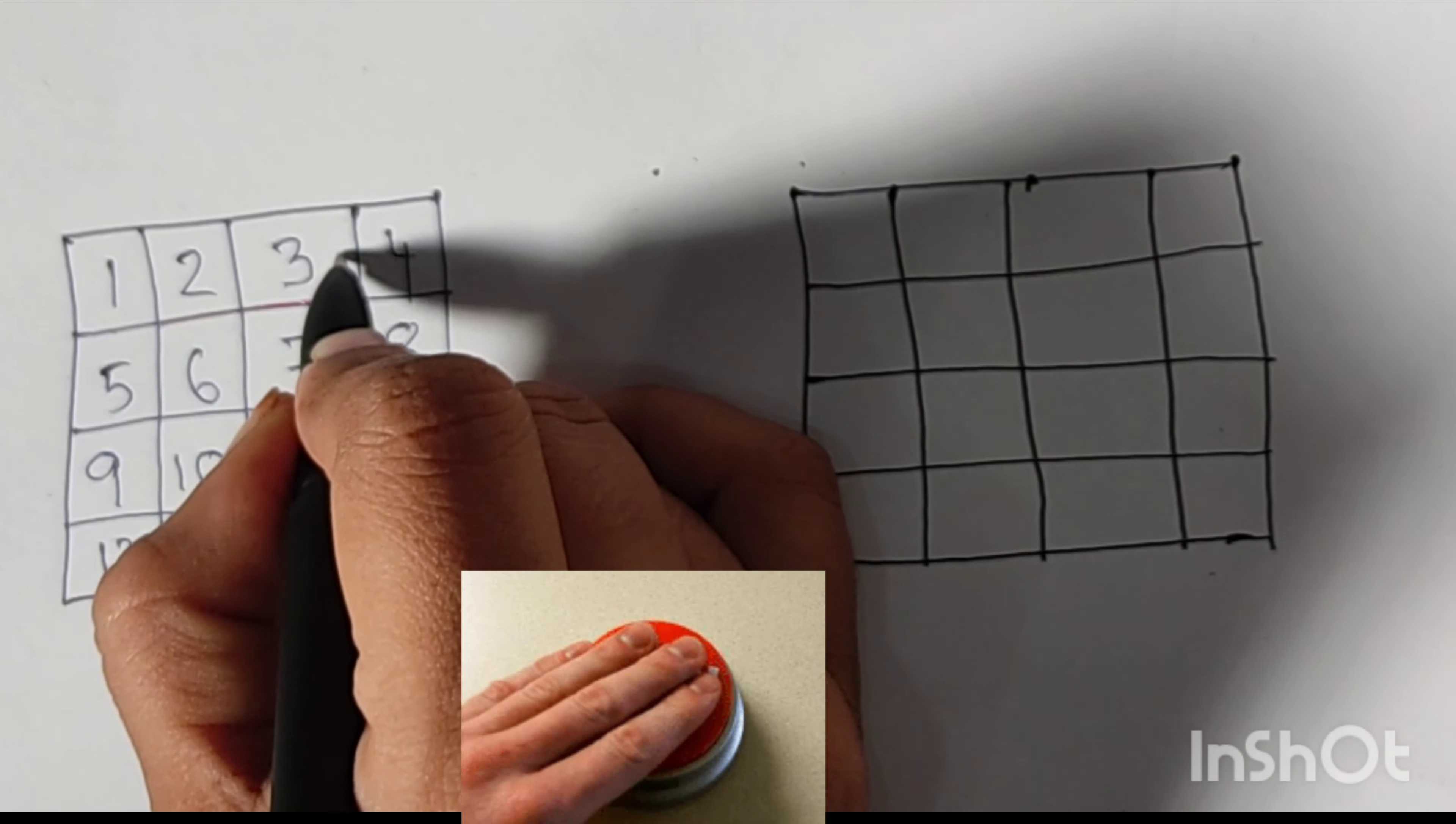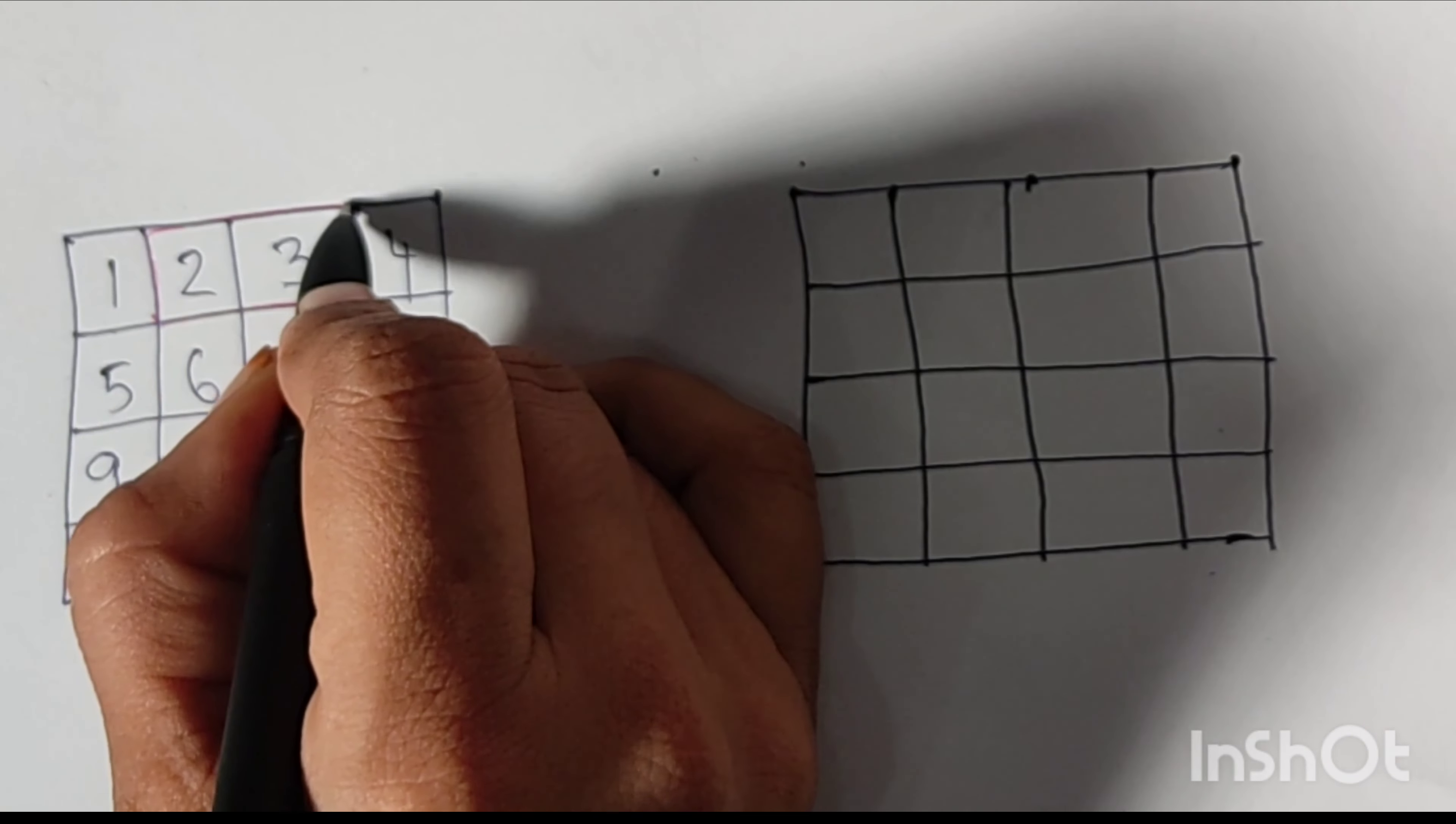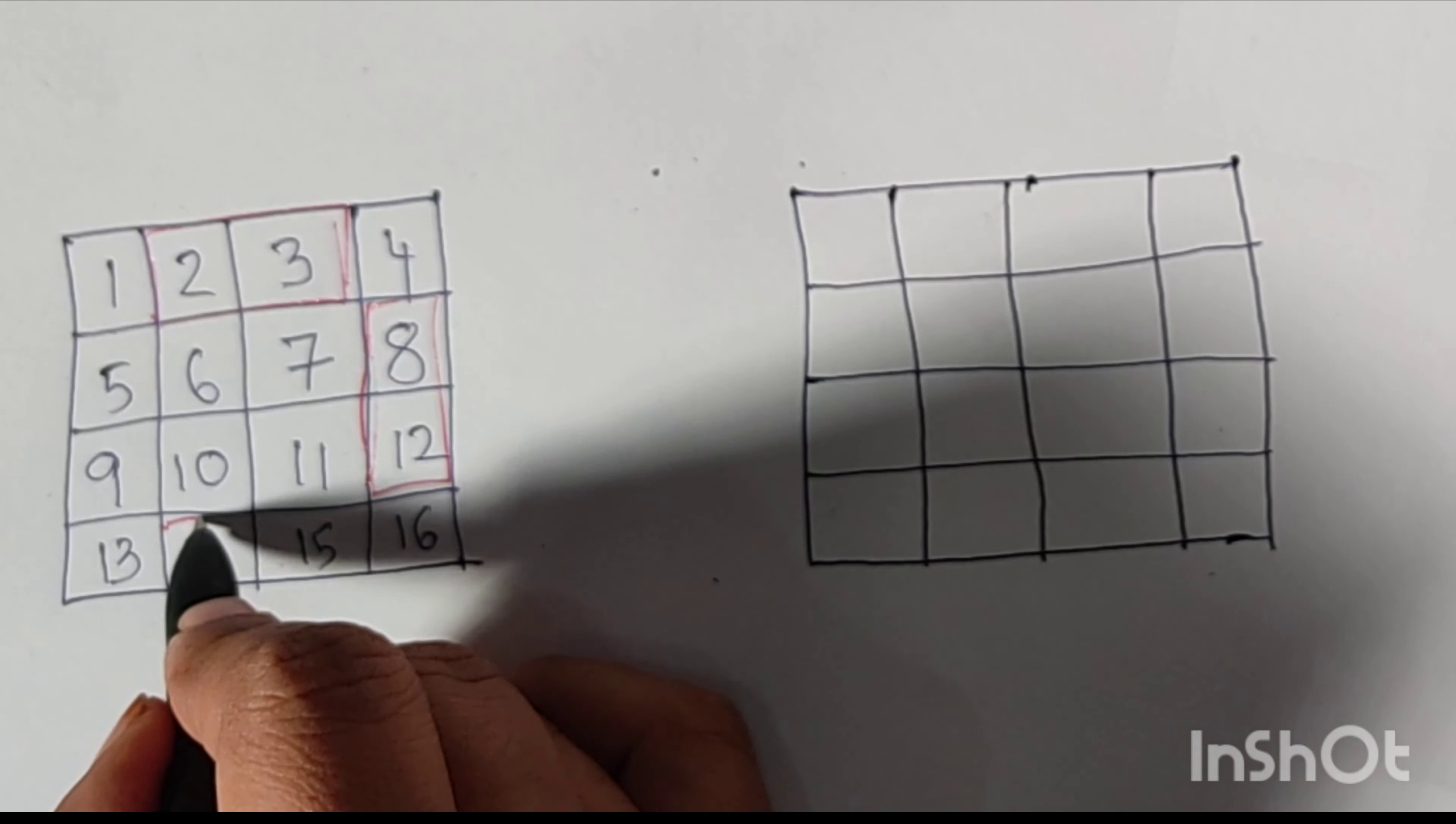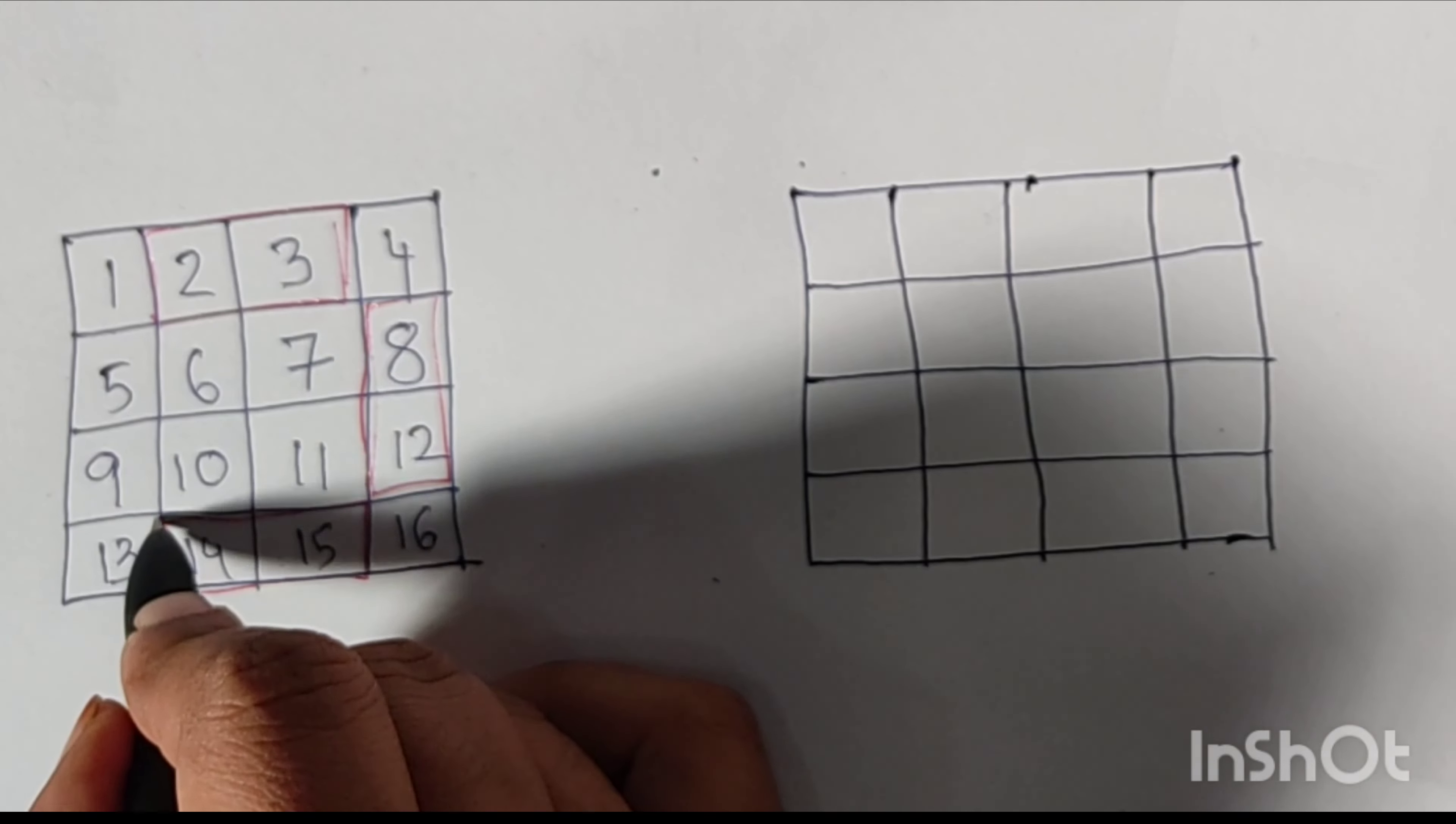For solving easily the 4 by 4 magic square, first of all take 2 magic squares. In the first box you have to write the numbers from 1 to 16 in sequential rows.